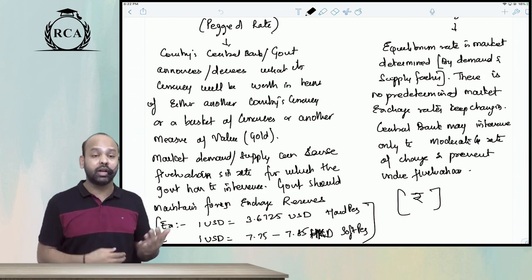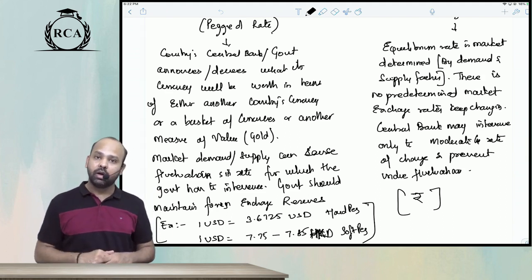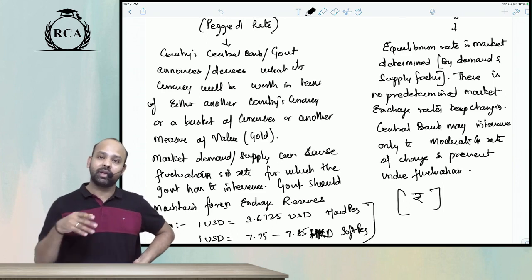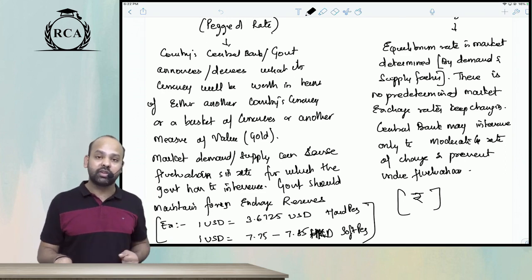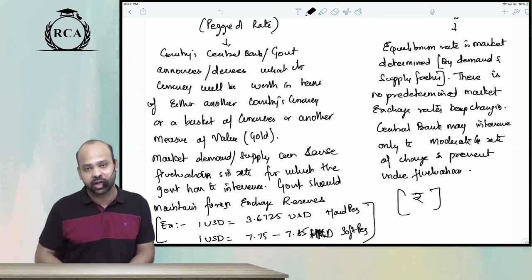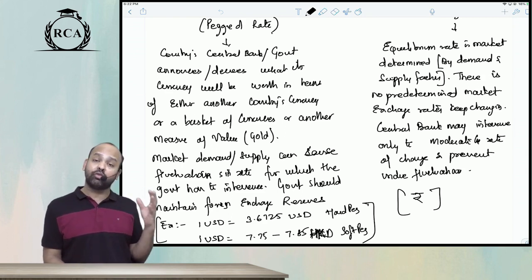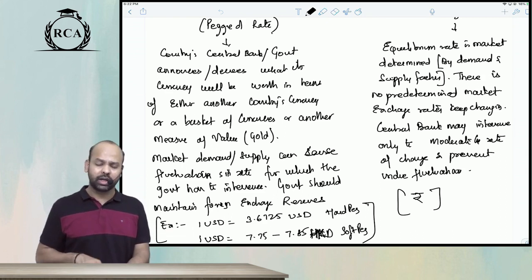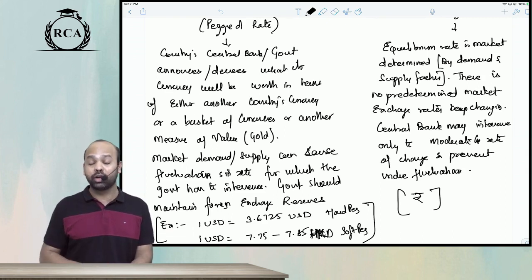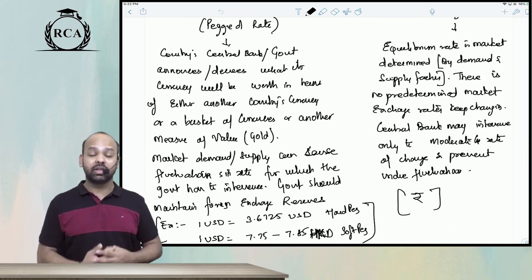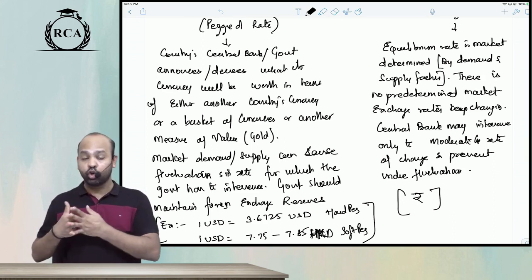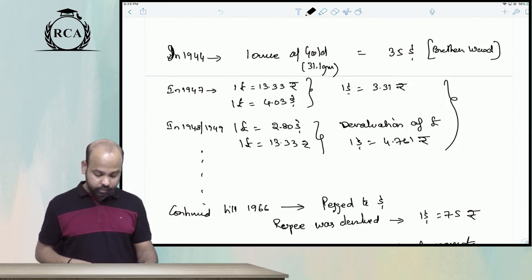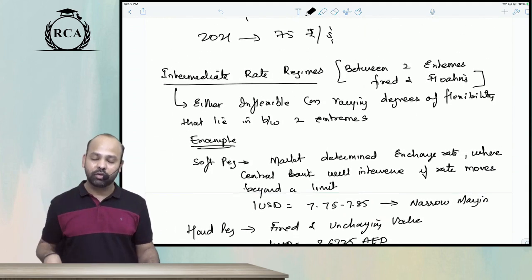There will be a lot of intervention required on the part of the government. On the other side, a floating rate system is where the exchange rate is determined by market demand and supply factors. Government intervention is required only to prevent undue fluctuations or too much volatility in the exchange rate. India followed a fixed rate regime till 1992–93, after which we shifted to a floating rate regime. There are still countries that follow a fixed rate regime, like the UAE Emirati dirham and the Hong Kong dollar.